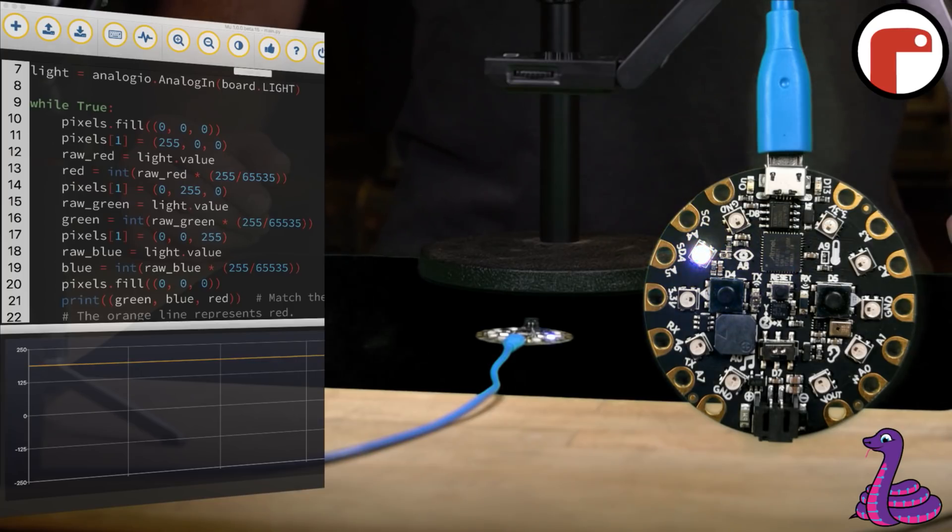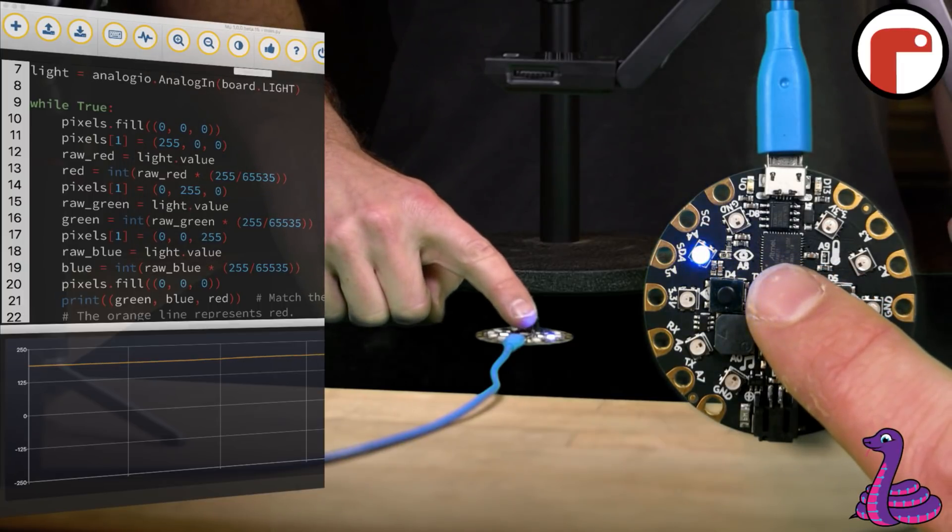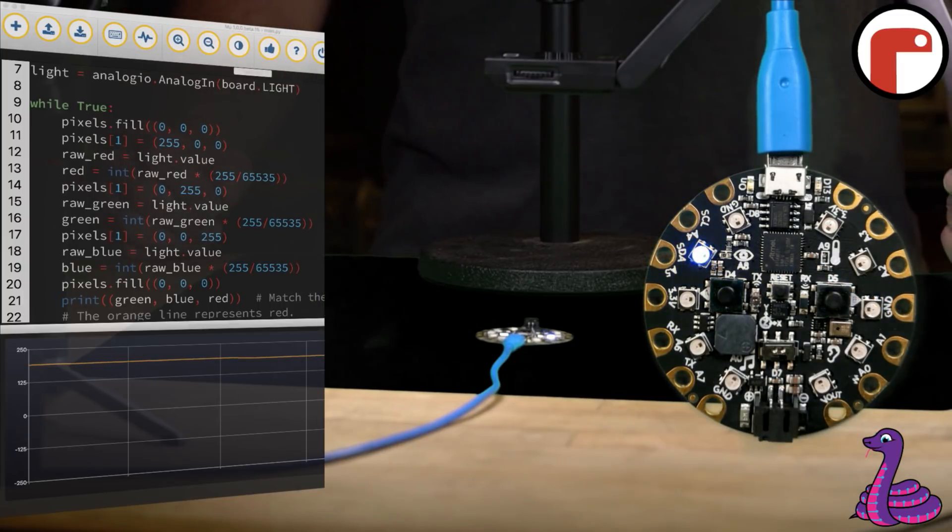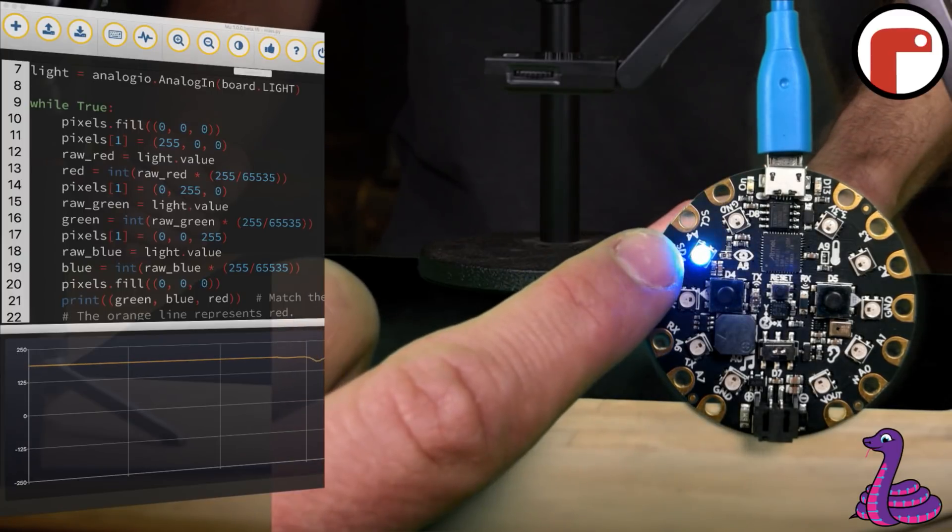The Circuit Playground Express has a built-in light sensor. This is useful for detecting overall brightness levels, but we can also use it as a color sensor. This is possible because there's a full-color RGB NeoPixel LED right next to the light sensor.